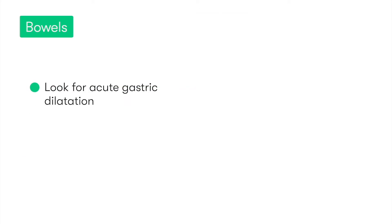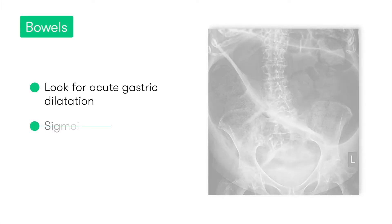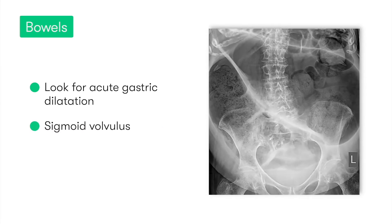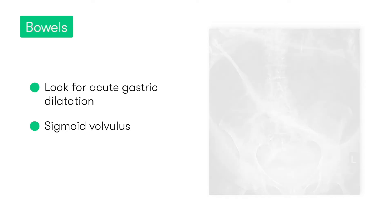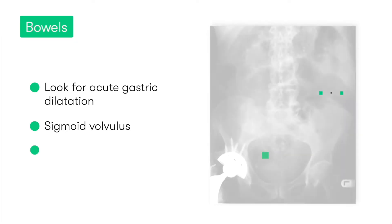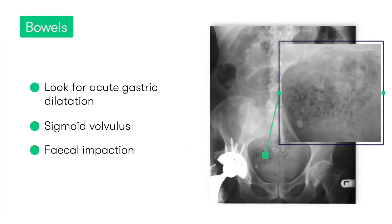Other bowel and GI tract findings to look for include acute gastric dilatation, which may need relieving by an NG tube; a sigmoid volvulus, which will be evident through its characteristic coffee bean appearance; and also the presence of feces in a patient who may present with constipation.